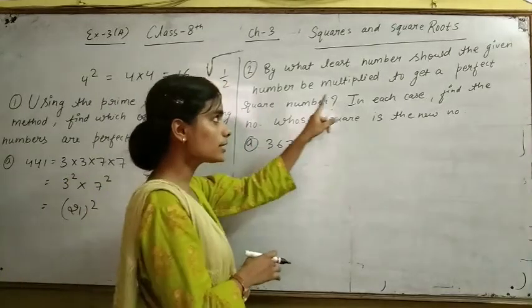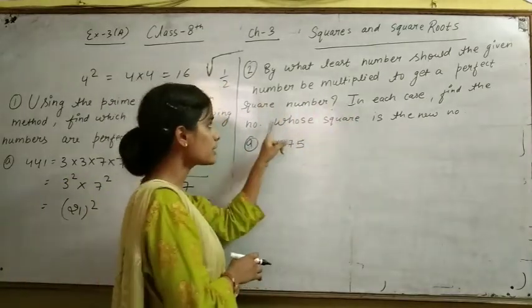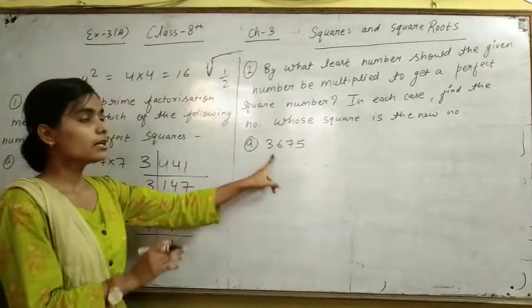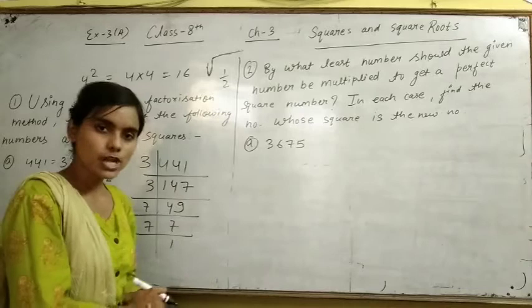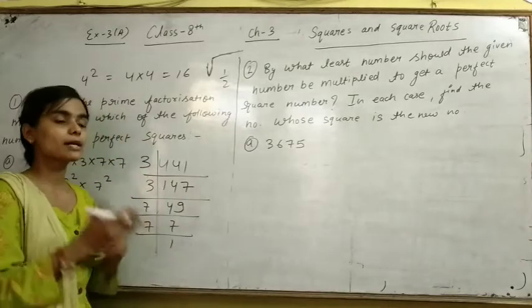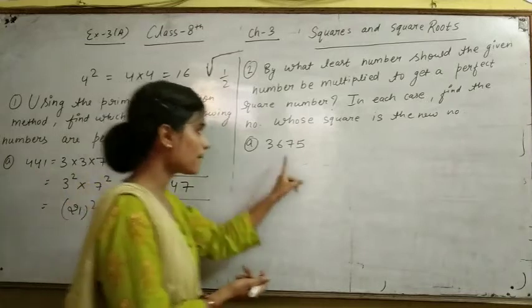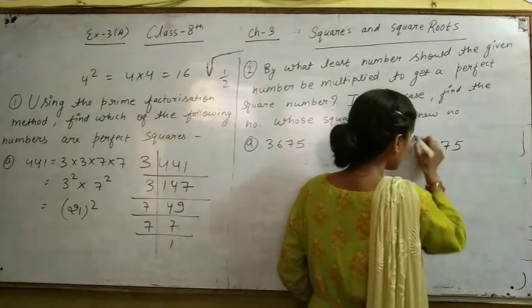Second question: what is the least number that must be multiplied to get a perfect square? How do we find what number to multiply to get a perfect square? First, we start with 3, 6, 7, 5.